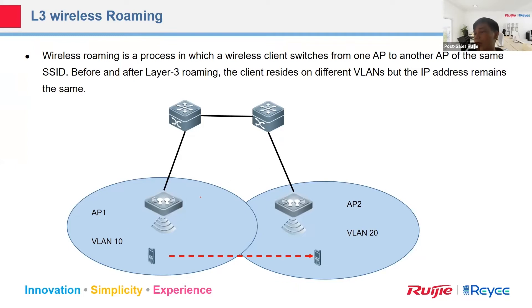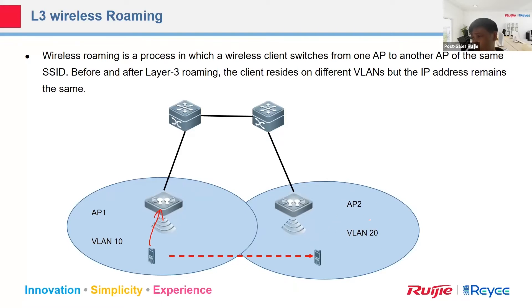In this topology we have the phone in the IP1 area. When the phone connects to IP1, it receives an IP address belonging to VLAN 10.